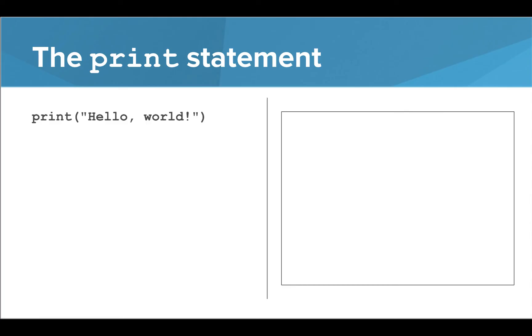So here we have your program, or code, on the left and your console window on the right. When you click the run button, the Python interpreter will jump right to the first, and in this case only, line in your program. It executes that line, and you see hello world appear on your console.